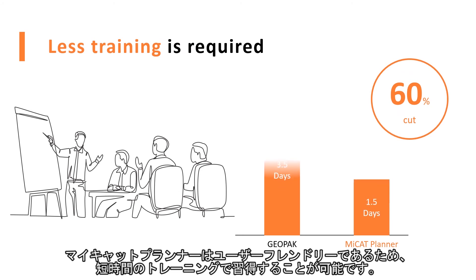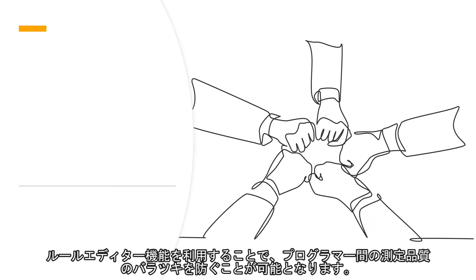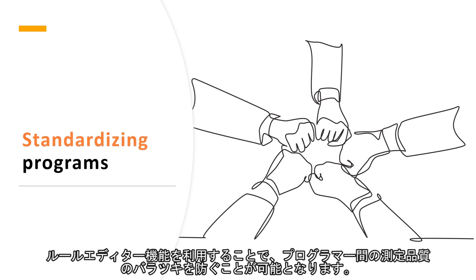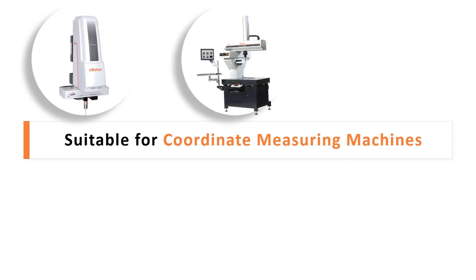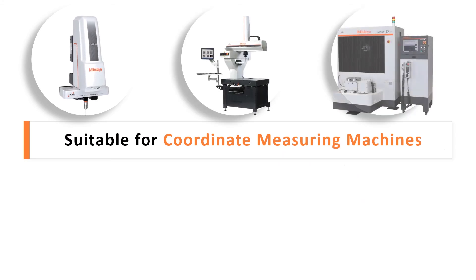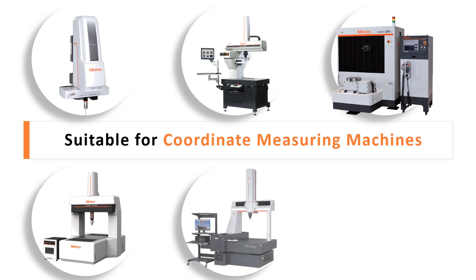A shorter training course is dedicated for MiKit Planner users. Utilizing the rule editor function to set measurement rules prevents variation in measurement quality between program writers. MiKit Planner is suitable for Mitutoyo coordinate measuring machines. Visit your nearest Mitutoyo showroom for more information.